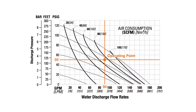From this operating point, the curve will identify the required air inlet pressure to achieve the desired performance by following the gray curved axis. In this example, the operating point is between the 80 PSIG and 100 PSIG air inlet curves. Thus, the required air inlet pressure to operate the pump would be 90 PSIG.